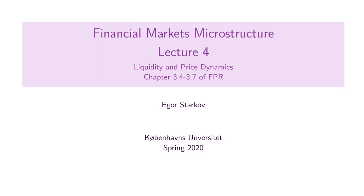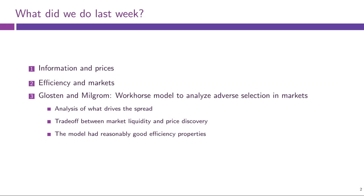Hello and welcome to Financial Markets Microstructure. This is lecture number 4. In the previous class we discussed the relation between information and prices in the markets. In particular we discussed what it means for prices to be efficient given the information available to market participants. We also introduced the Glosten-Milgram model, which explored how asymmetric information in markets can drive the bid-ask spread. We saw a trade-off between market liquidity and price discovery, and that more informed traders foster better price discovery but harm market liquidity.